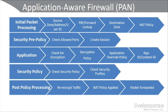Then there's an application override policy. What if you created a policy for something that is a custom application — maybe a custom front end to a database in your organization? You can create an override, so you're only going to inspect it at layer 3 and 4, not doing deep packet content inspection. If not overriding, you can do application identification and content ID policy going all the way up into layer 7 of the OSI model. Then processing goes to the security policy, checking security profiles, and then post-processing — re-encrypting the traffic, applying a NAT policy, and forwarding the packet.